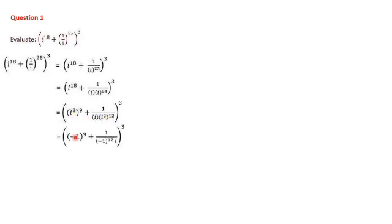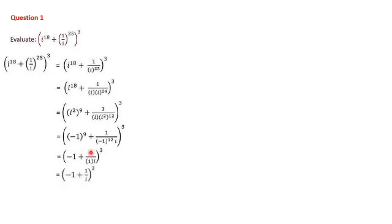Then, i² = -1. So (-1)^9 + [(-1)^12 × i]. Now, (-1)^9 = -1 since 9 is odd. And (-1)^12 = +1 since 12 is even. So we get -1 + (1 × i), giving us -1 + 1 divided by i. That is, (-1 + 1) / (1 × i) = 0/i... actually it becomes (-1 + i), the whole cube.